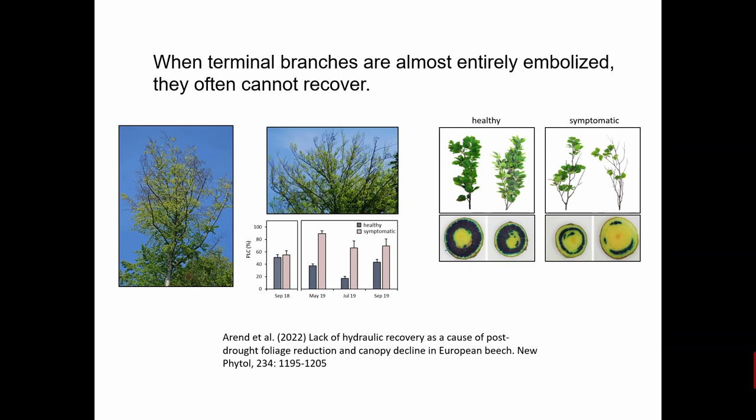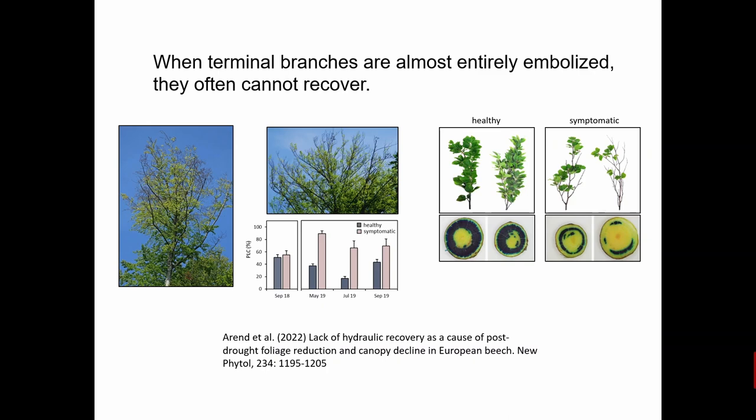I am not saying embolism is completely a phantom. It does occur and may have fatal consequences when it occurs in terminal branches. This has been found for beech, which embolizes to such an extent in terminal twigs that they cannot refill — and then we see these badly looking beeches after a severe drought, such as we had in 2018.